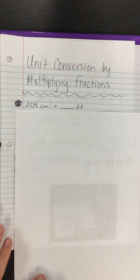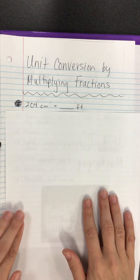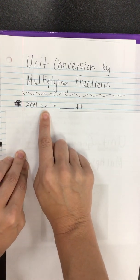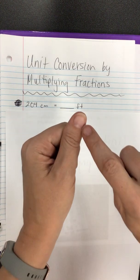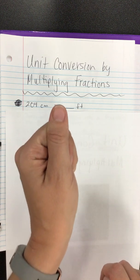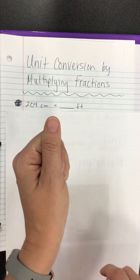Units are just labels that we put on numbers to give them meaning. For instance, 204 centimeters. A centimeter is roughly the size, the length of my thumbnail here. So 204 of those, that is a lot of thumbnails.